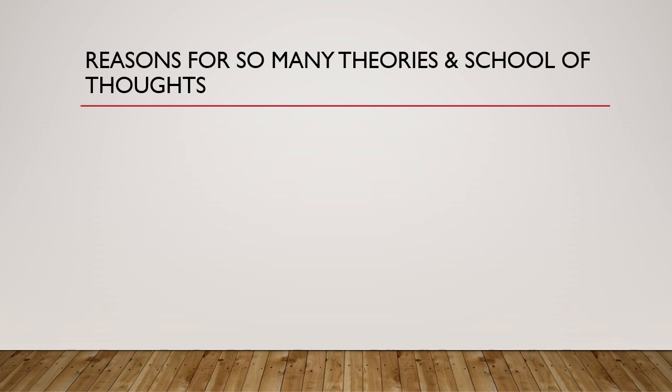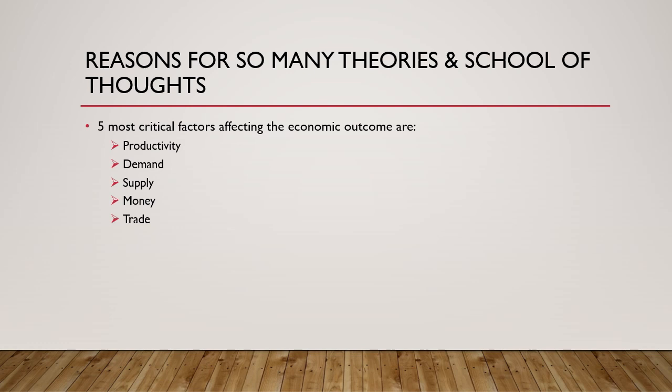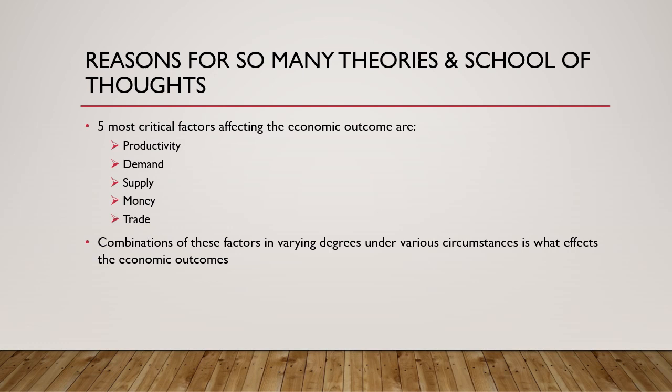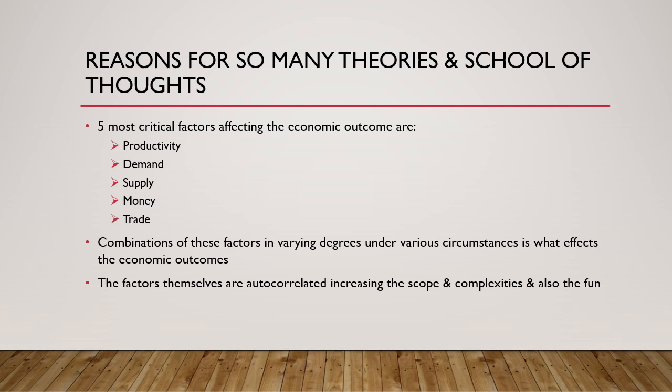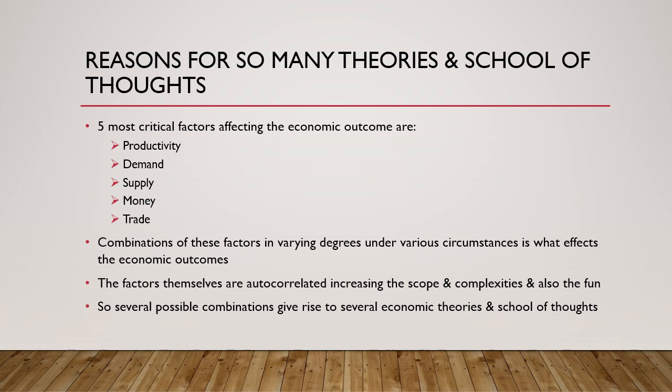What are the reasons for so many theories and economic schools of thought? To start with, there are five critical factors that affect economic outcomes. They are productivity, demand, supply, money, and trade — not in any particular order. The combination of these factors in varying degrees and under various circumstances is what really affects economic outcomes. These factors are themselves autocorrelated, thus increasing the scope and complexity of economics as a field of study. So there are several possible combinations of these factors, and at a given point of time there can be several possible economic outcomes — hence the reason for so many economic theories.